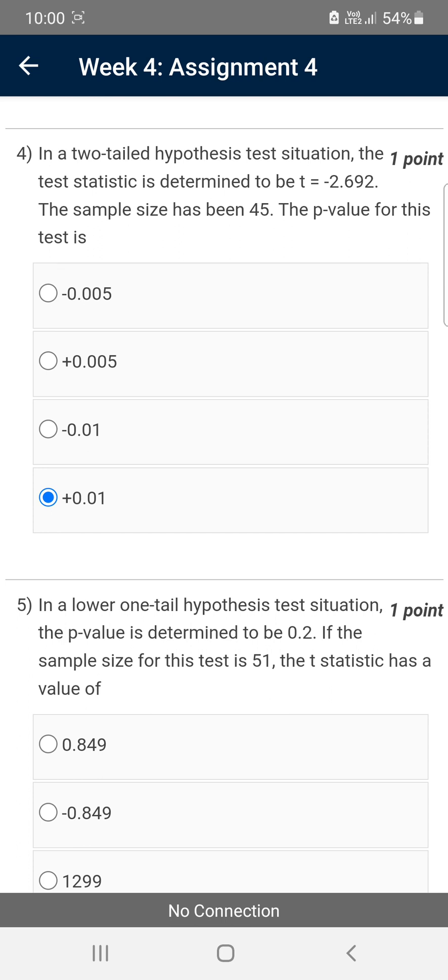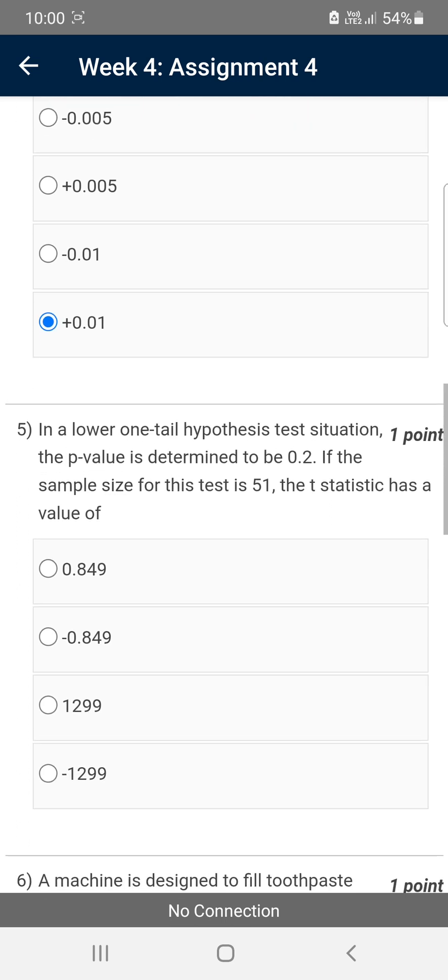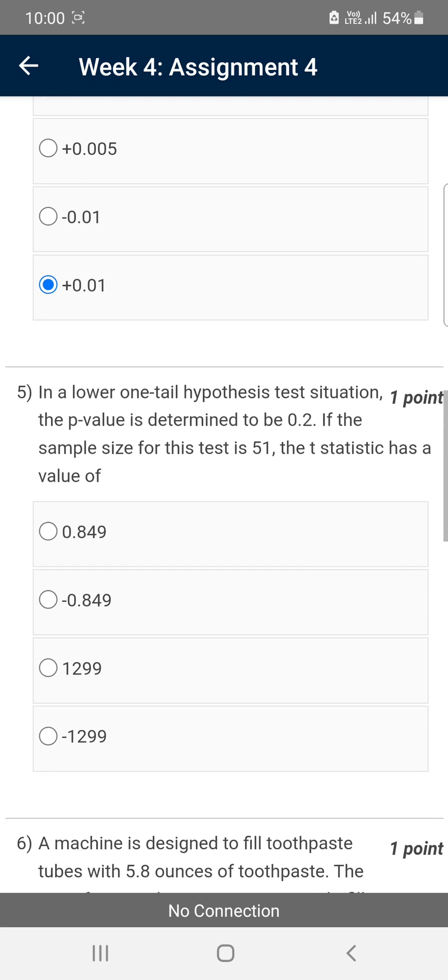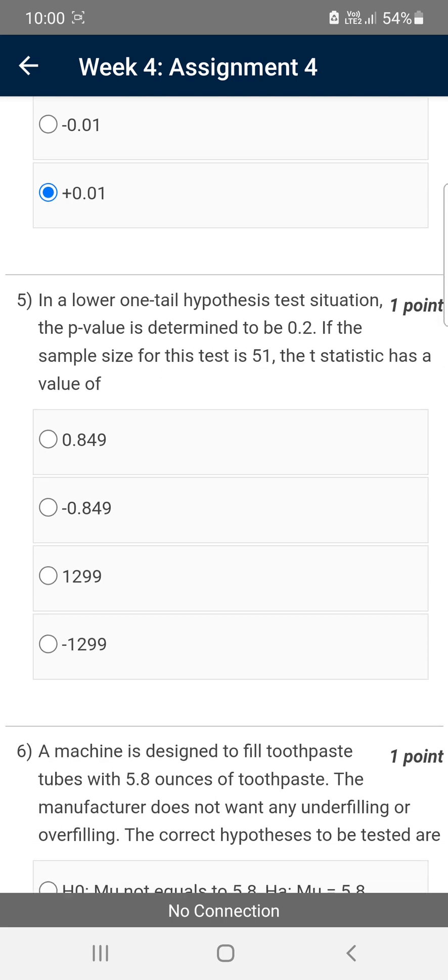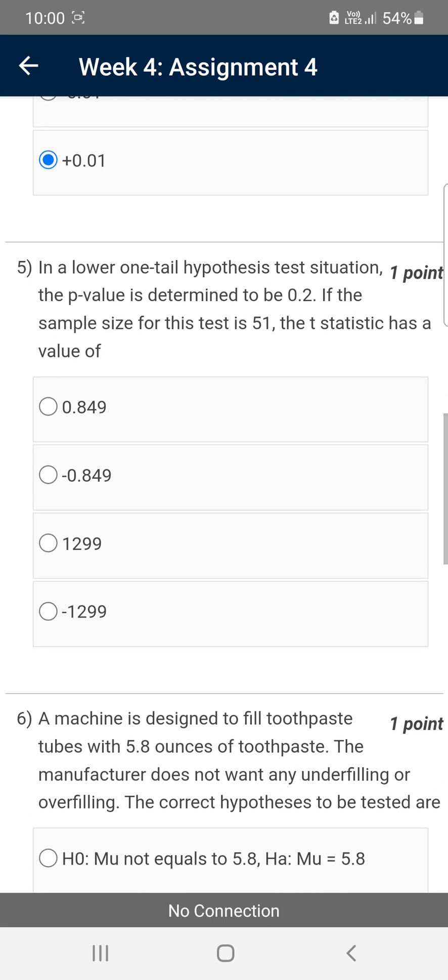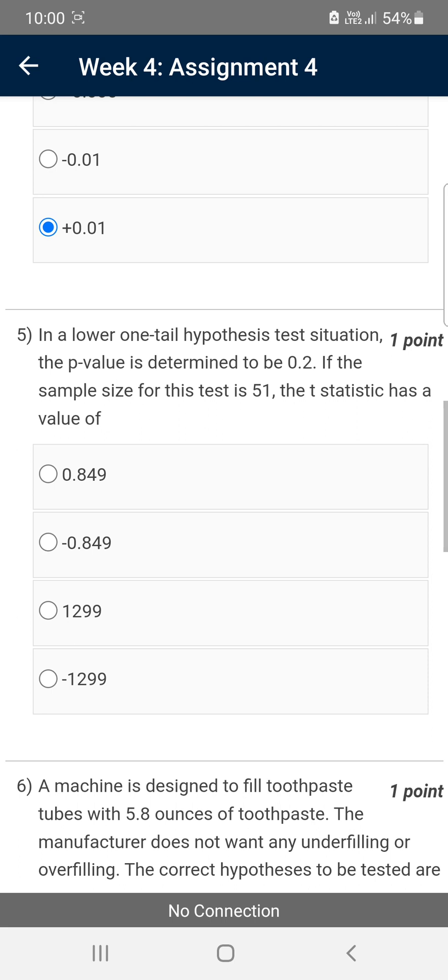Moving on to the fifth question. In a lower one-tail hypothesis test situation, the p-value is determined to be 0.2. The sample size for this test is 51. The t statistic has a value of—they are asking the value of t. For the fifth question, the solution is option B: minus 0.849.